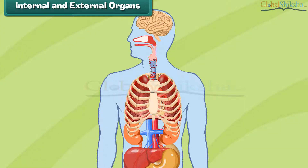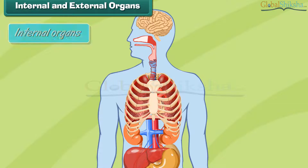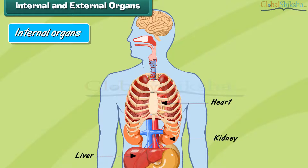The organs that are located inside the human body and not visible to the human eye from outside are called internal organs. For example, heart, liver, kidneys, brain, bones, etc. Let us understand how some internal organs function.